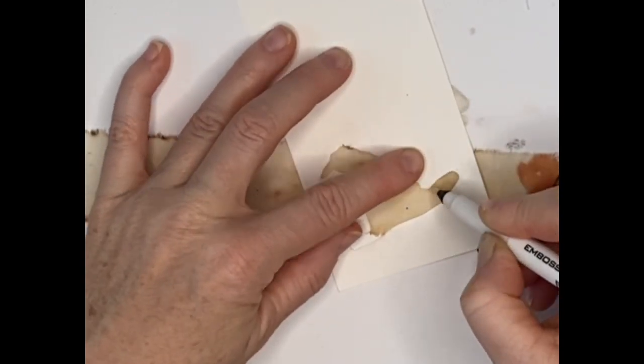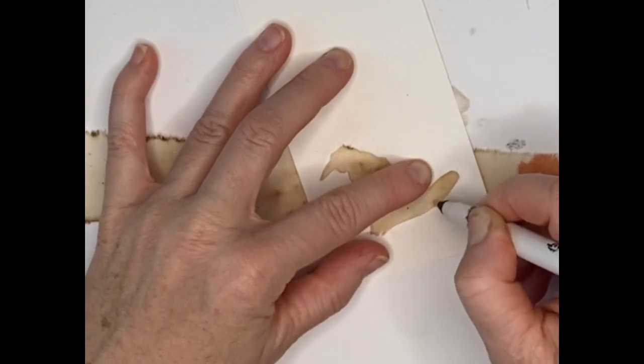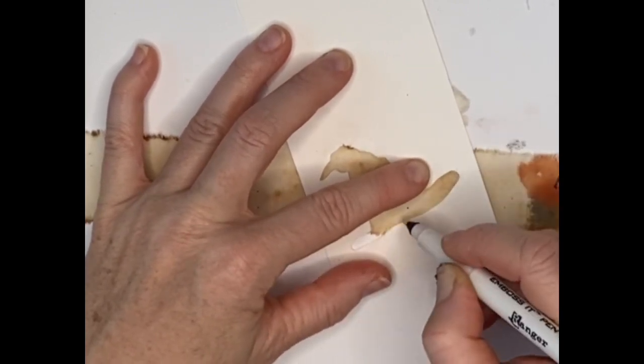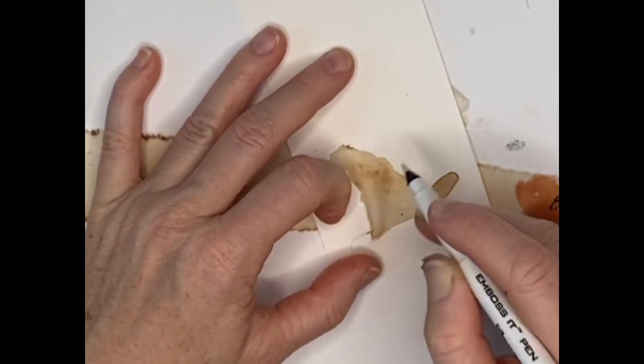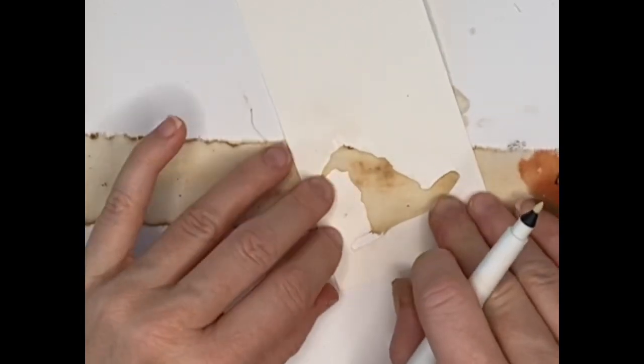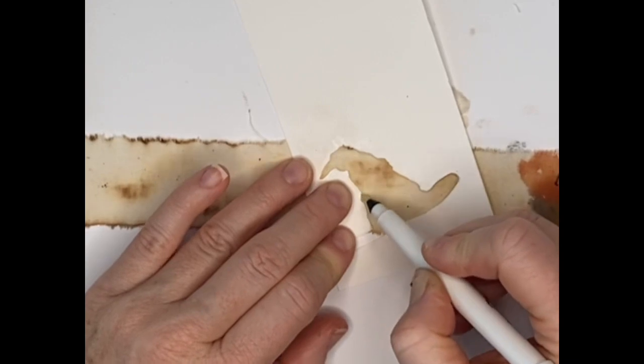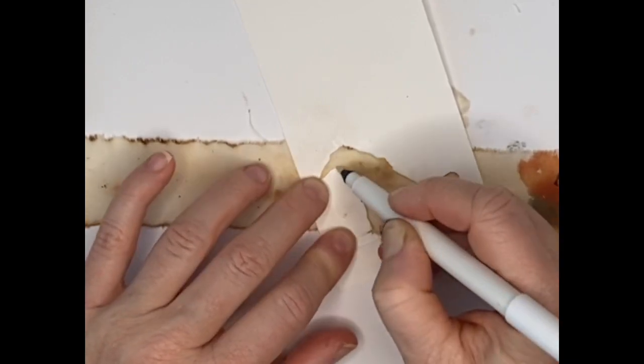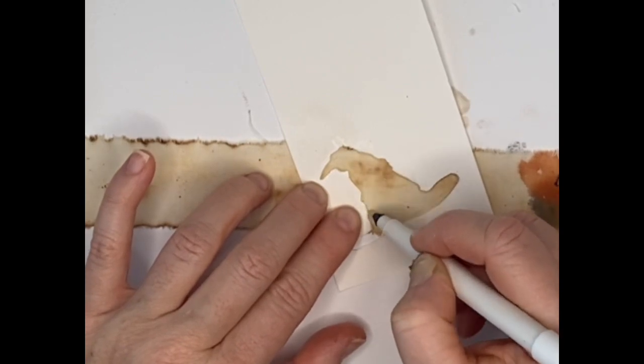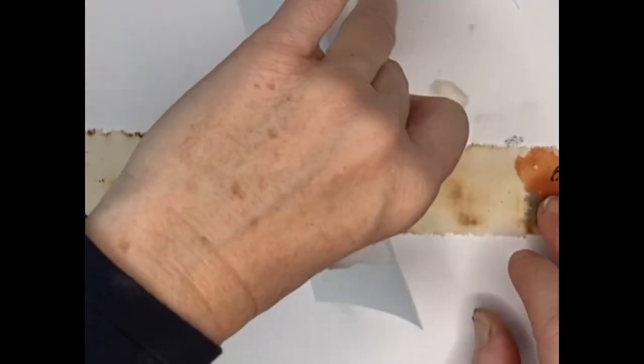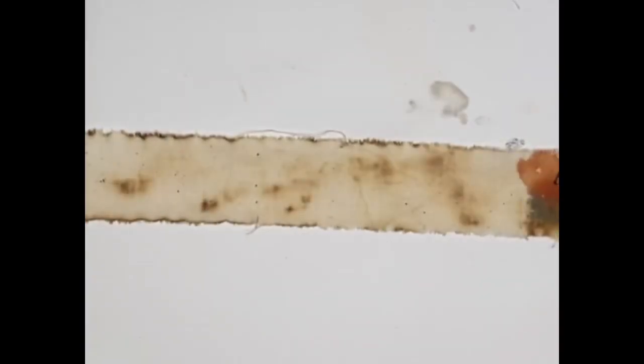I found with the embossing pen just getting good coverage is really all you're looking for. I know you can't see it, but I'm going over a couple of the pieces here, the places that I want to make sure I have the design in place. I was working relatively quickly so that it didn't dry.